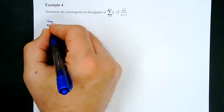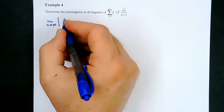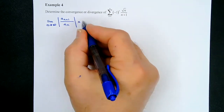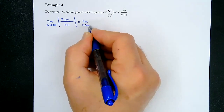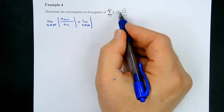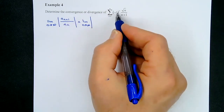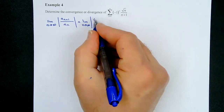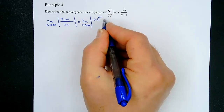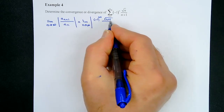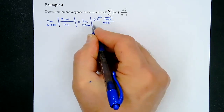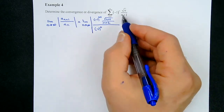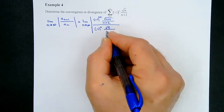Let's take the limit as n approaches infinity of |a_(n+1)/a_n|. For a_(n+1), this becomes: (−1)^(n+1) · √(n+1) / (n+2) in the numerator, and (−1)^n · √n / (n+1) in the denominator. Since we're taking the absolute value, the (−1) terms vanish. This fraction divided by a fraction becomes the product: [√(n+1)/(n+2)] · [(n+1)/√n].